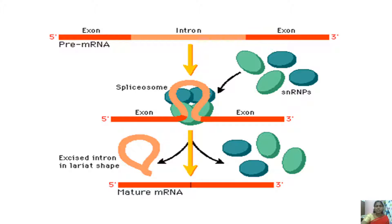Introns are non-coding sequences and exons are coding sequences. The removal of introns is done by the spliceosome — small nuclear ribonuclear proteins — which removes non-coding sequences and ligates the coding sequences to produce a mature mRNA. This mature mRNA is then transported from the nucleus through the nuclear pore to the site of protein synthesis on the ribosome.